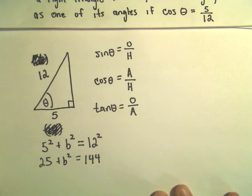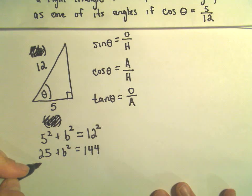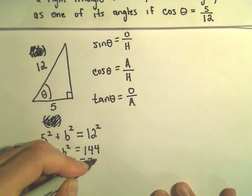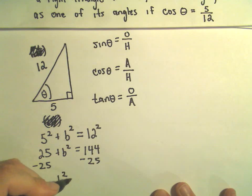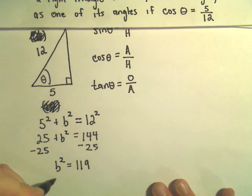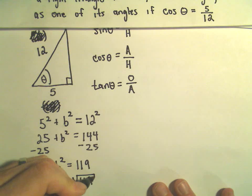If we subtract 25 from both sides, we're going to get 119. And if you take the square root of both sides, we'll simply get that B equals the square root of 119.